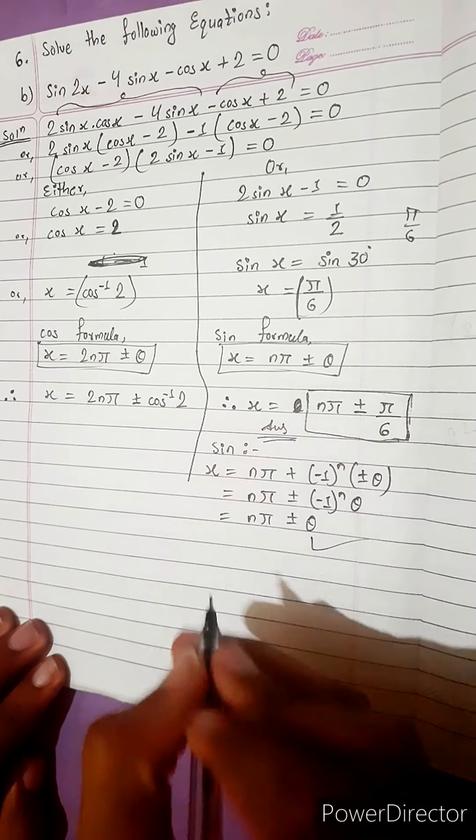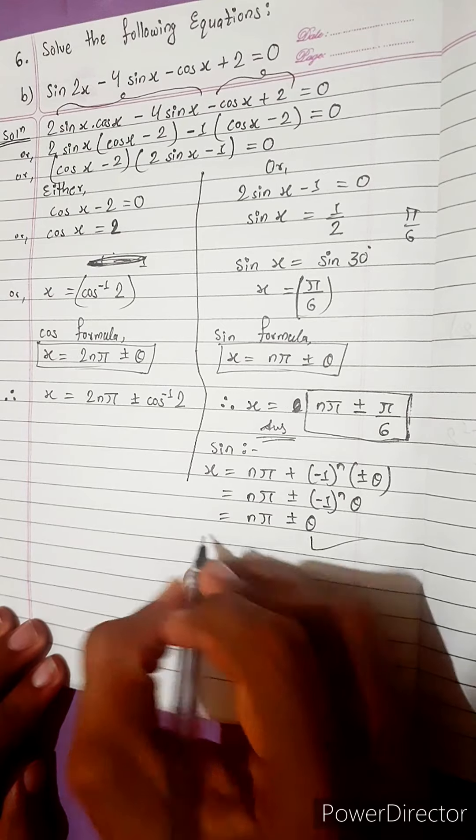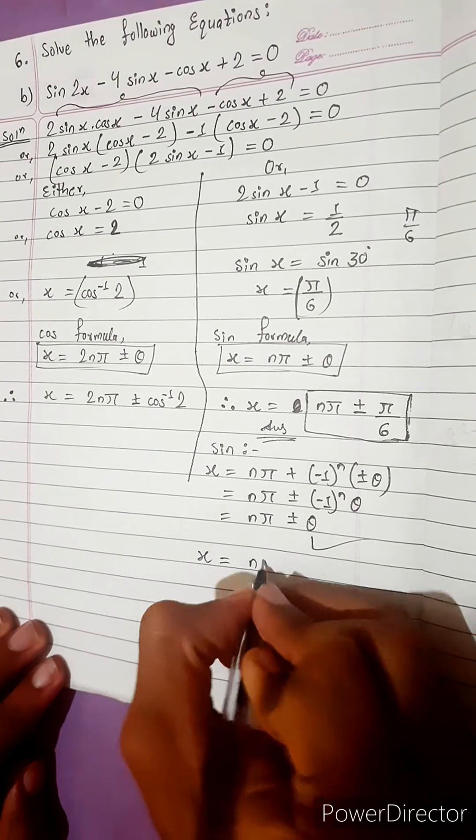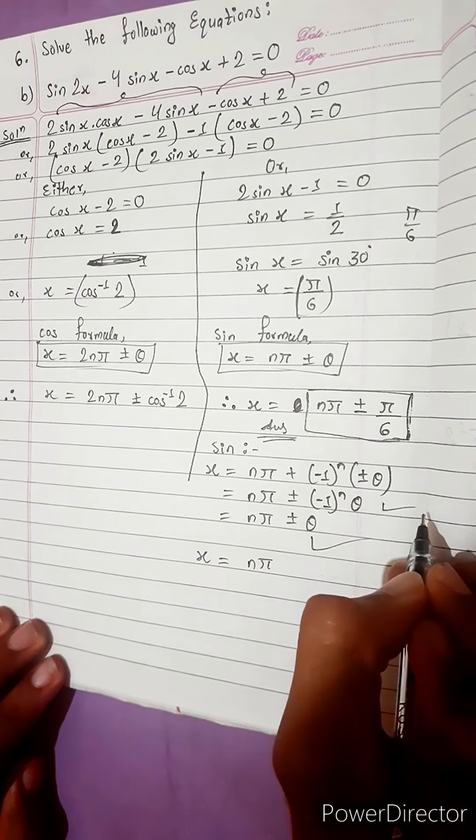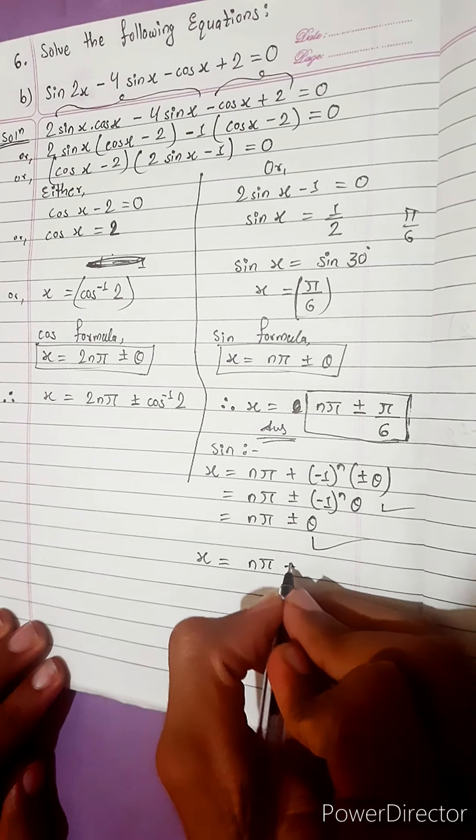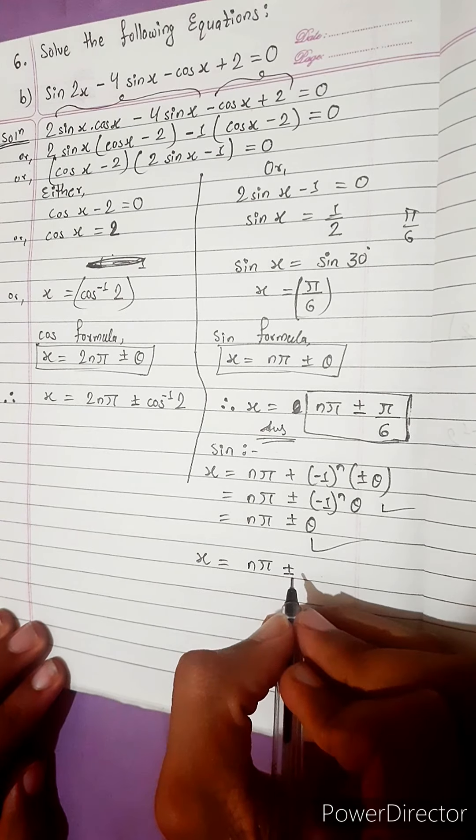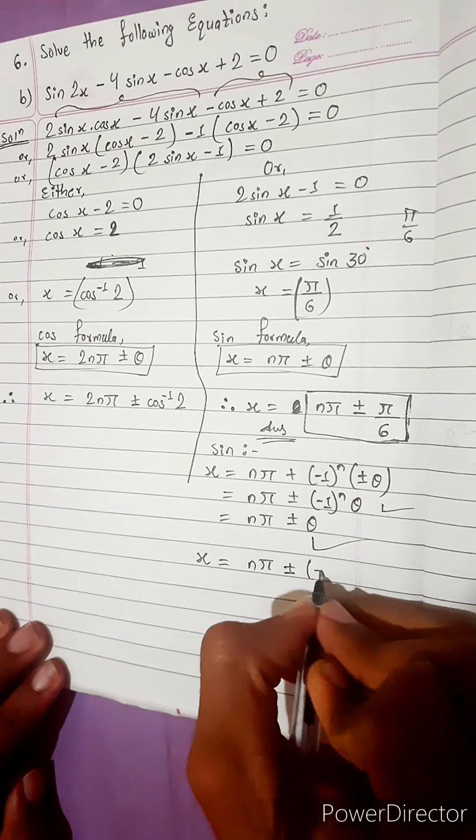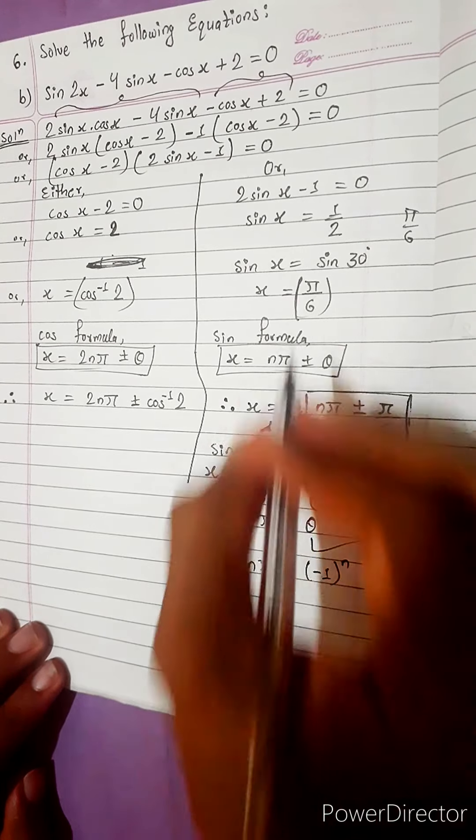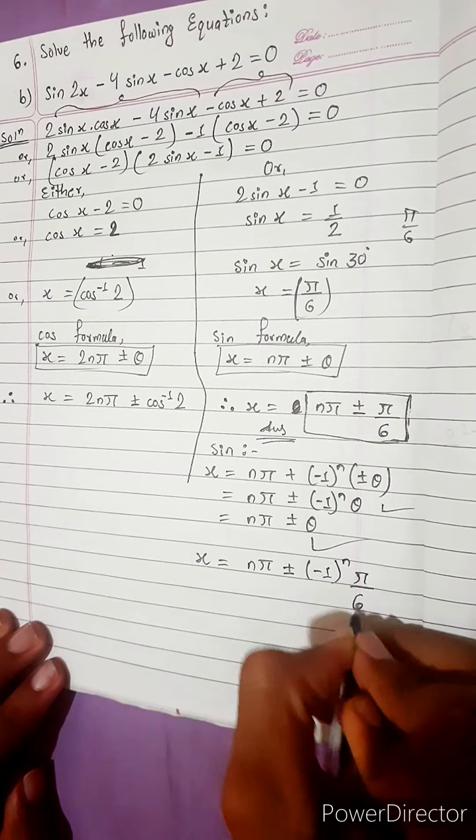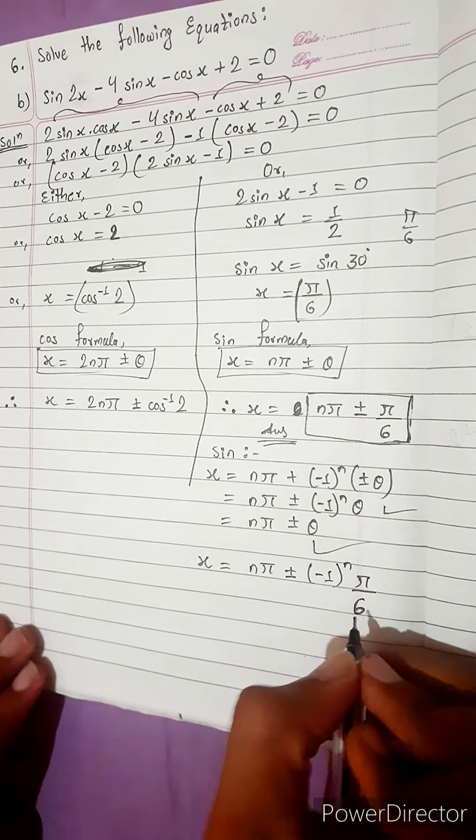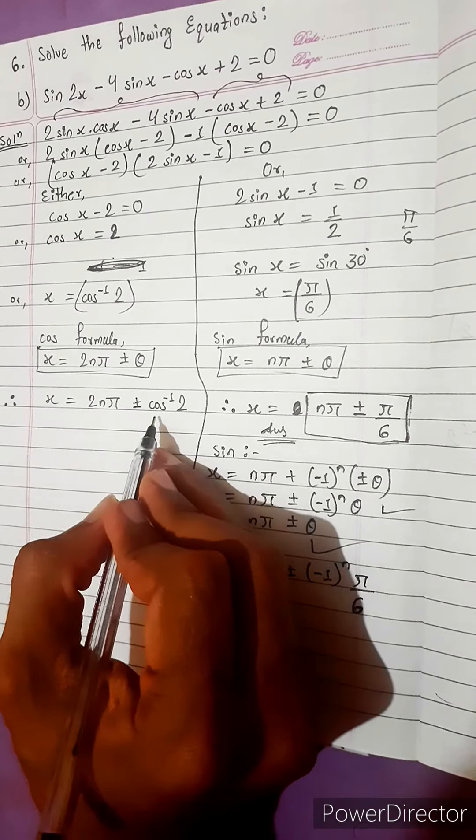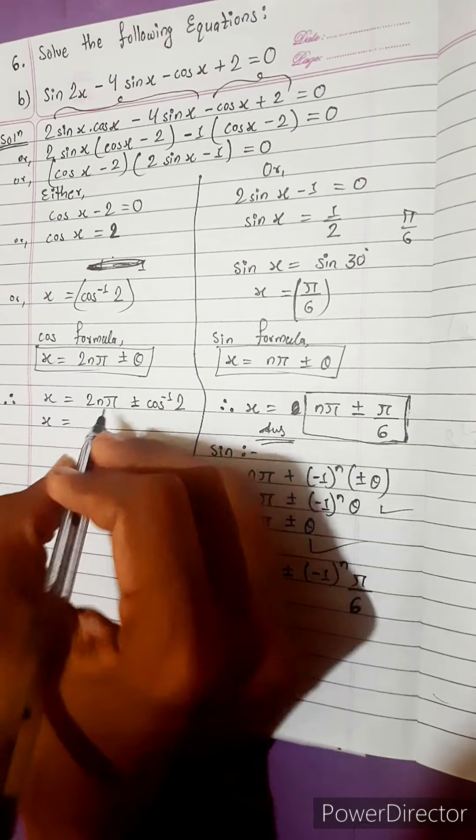So we use this very easy formula, but this is not given as answer. But I prefer this is also answer. And to satisfy book, book has followed this second step. n pi plus minus, minus 1 power n, theta means pi by 6.